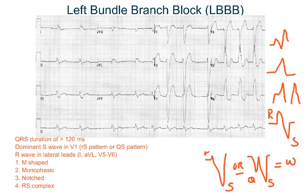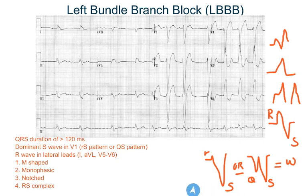In left bundle branch block, you look at V1 and see that the S wave is dominant. You can see two kinds of patterns here. Either the RS pattern — where there is a positive deflection which is the R wave and then a negative deflection which is the S wave — or you can see a QS pattern, that is two negative deflections. The QS pattern looks like a W, so if you see a W in V1, it's a left bundle branch block.